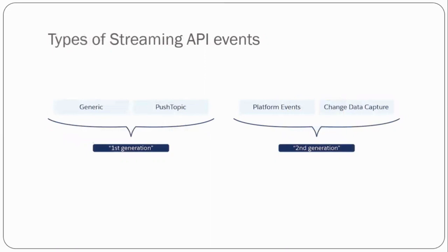We have generic events and push topic events, which are known as first-generation events because they were introduced earlier. Then we have platform events and Change Data Capture, which are called second-generation events because they provide more flexibility in terms of publishing and subscribing events using Apex triggers, flows, and process builder, and they also have more enhanced security.